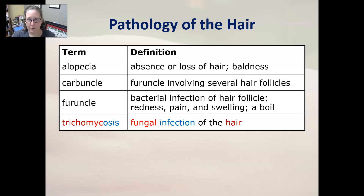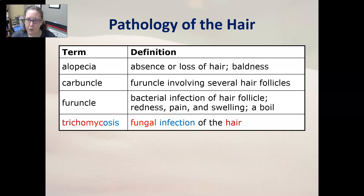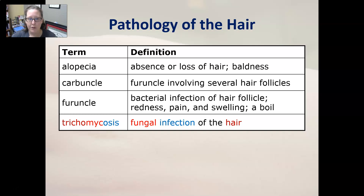Now we'll talk about the pathology of the hair. Alopecia is absence or loss of hair—baldness—but when we talk about alopecia with hair loss and baldness, it is actually an autoimmune condition. A carbuncle is a furuncle involving several hair follicles, and a furuncle is a bacterial infection of a hair follicle with redness, pain, and swelling, also referred to as a boil. One is a furuncle; several together is a carbuncle.